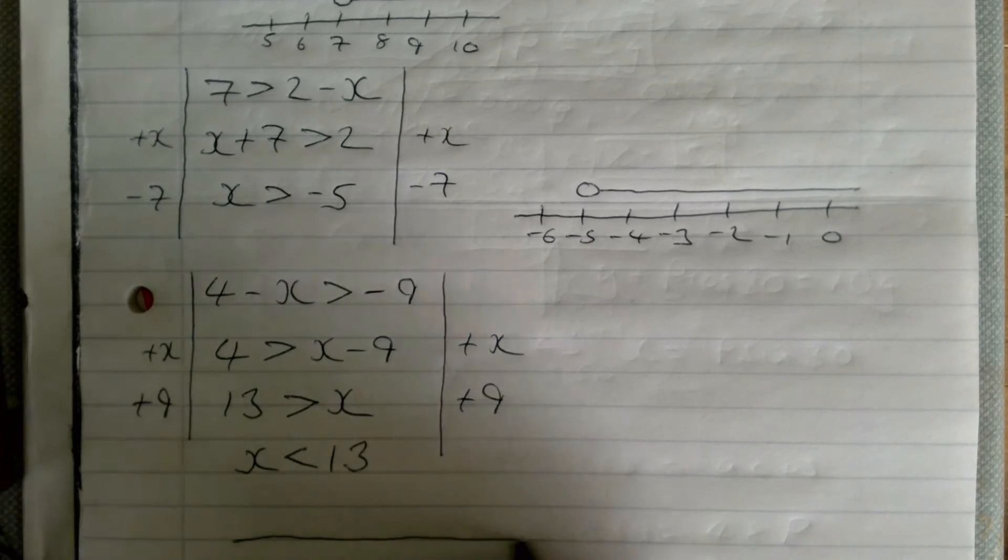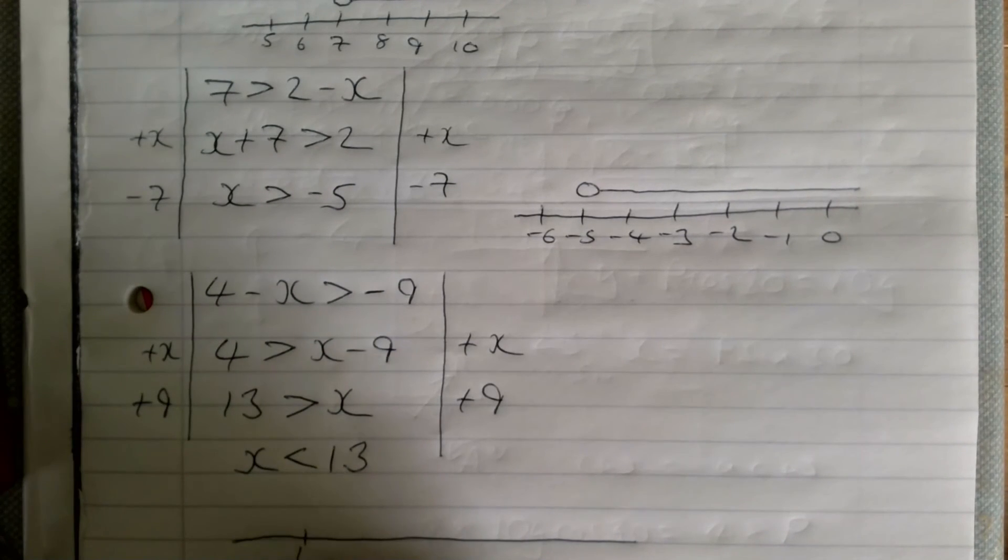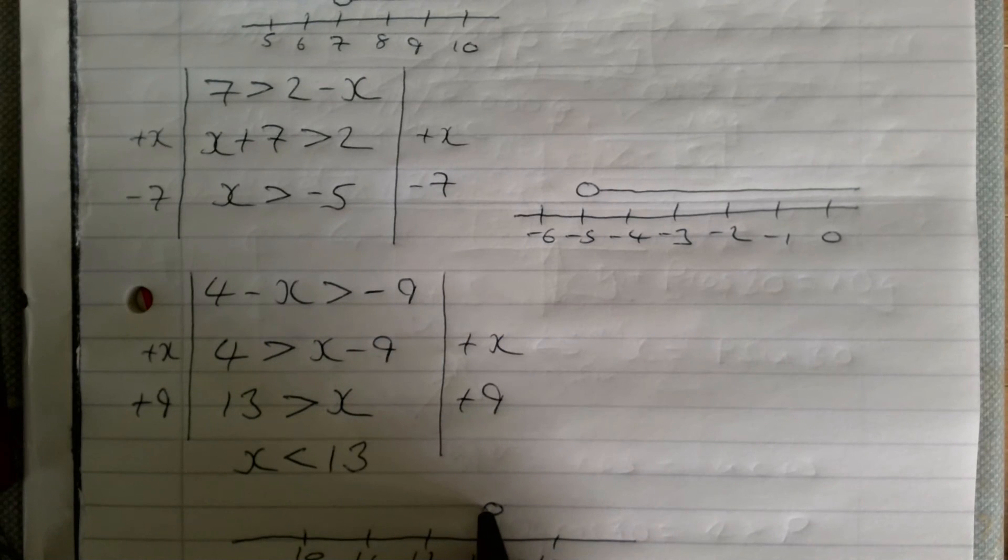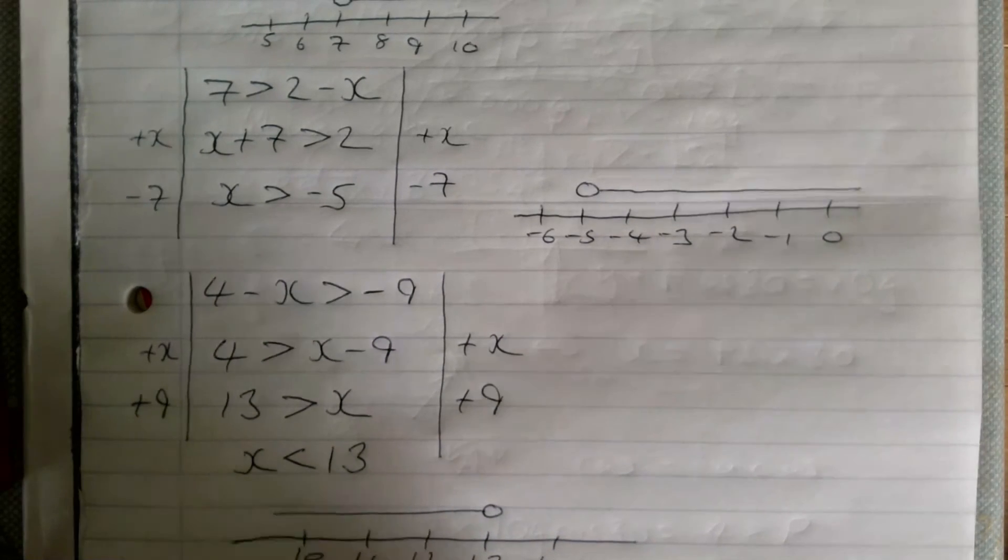Finally then, just for a number line: 10, 11, 12, 13, 14. I do my circle at 13 and it's less than 13, so it goes that way there.